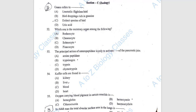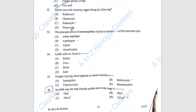Question number 51: Guano refers to uric acid, option D. Question 52: Which one is the excretory organ among the following? Solenocyte is the excretory organ.